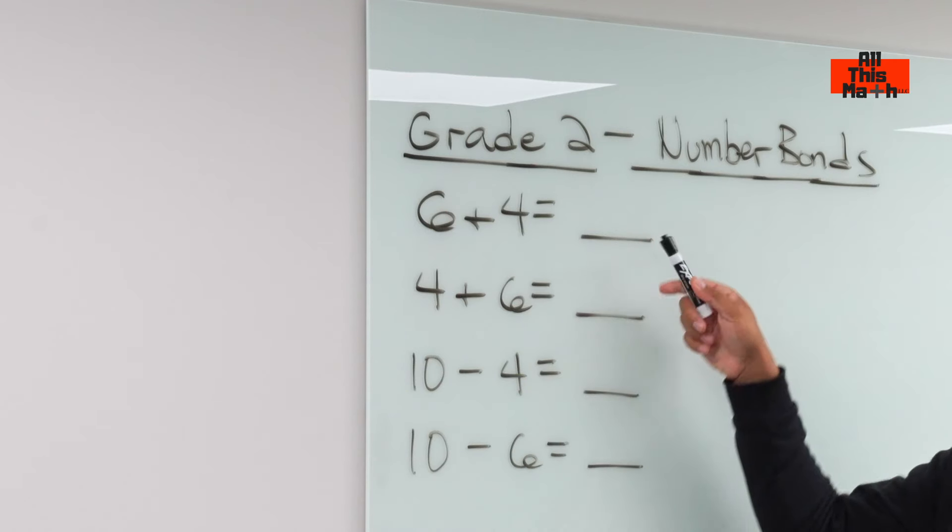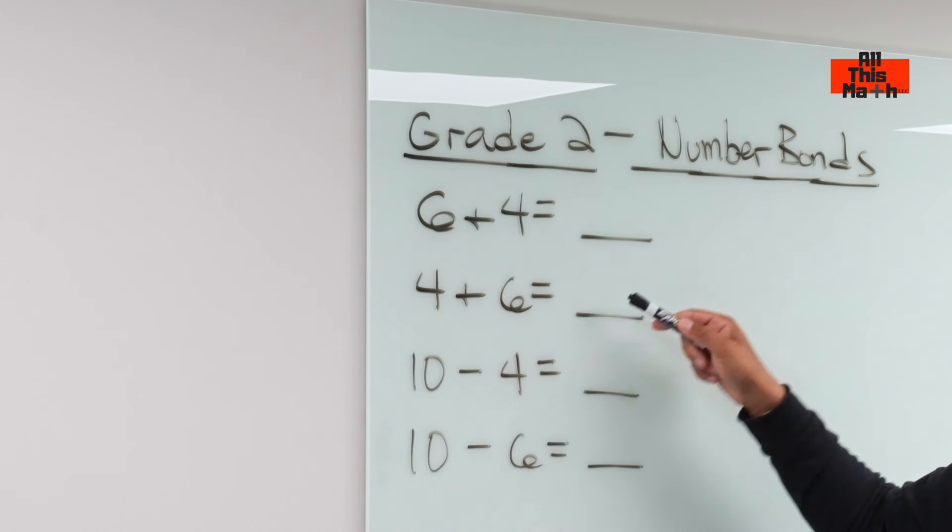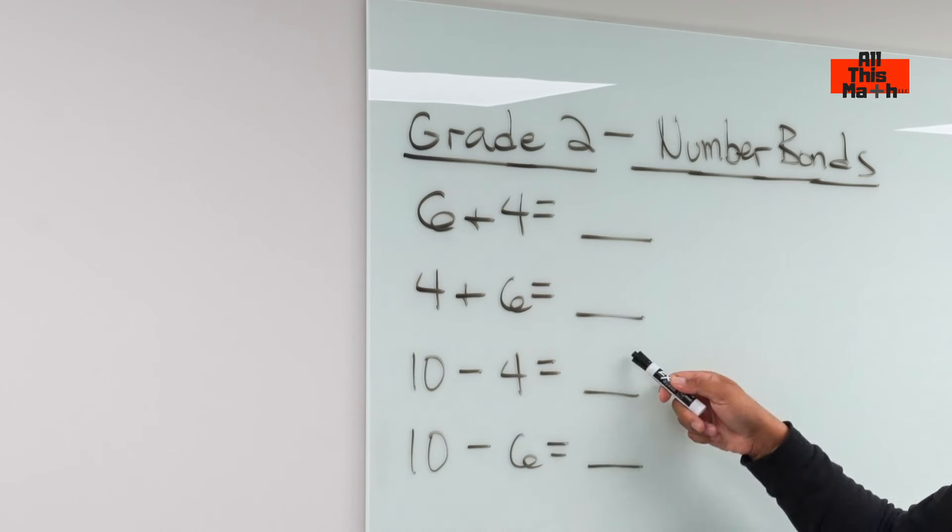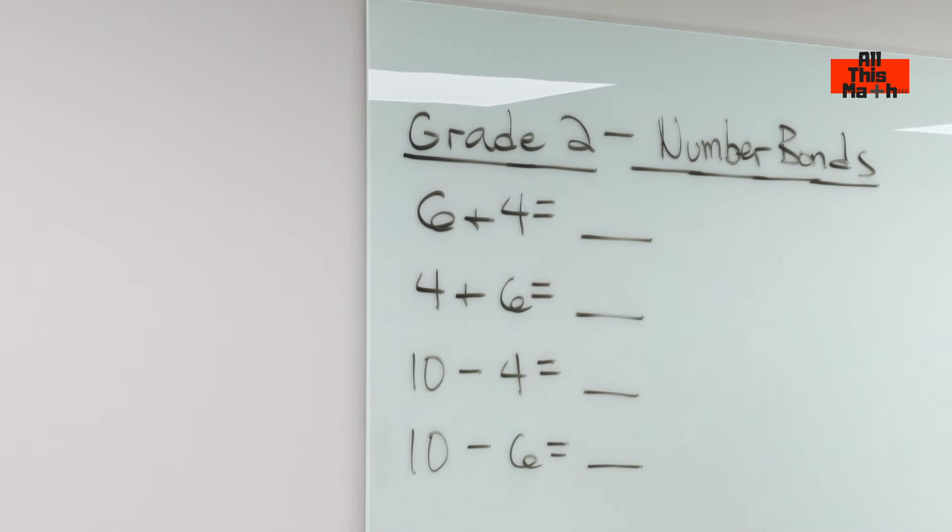So we have six plus four equals blank, four plus six equals blank, ten minus four equals blank, and ten minus six equals blank.